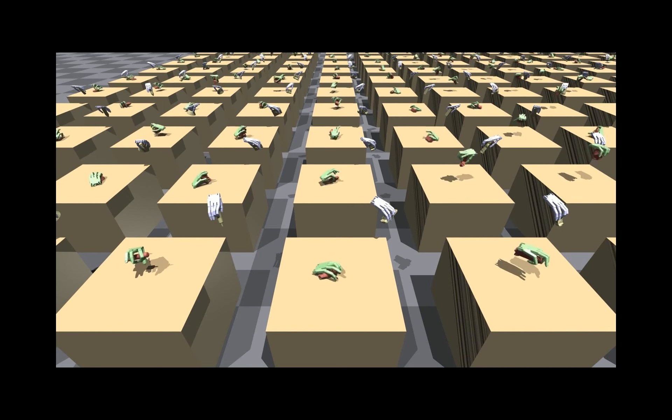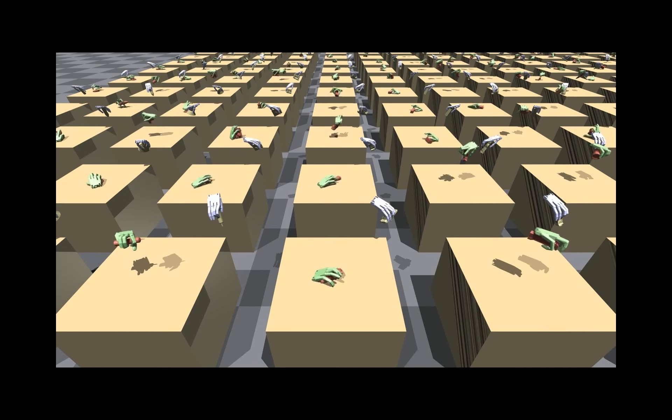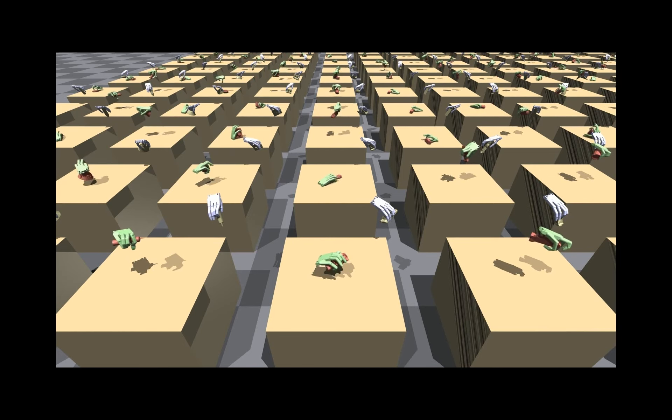The goal grasp labels we use during testing are predicted from the object point cloud using our vision pipeline.